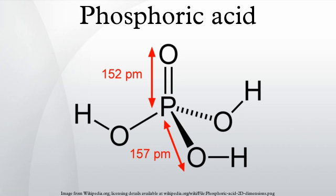In medicine, phosphoric acid is used in dentistry and orthodontics as an etching solution, to clean and roughen the surfaces of teeth where dental appliances or fillings will be placed. Phosphoric acid is also an ingredient in over-the-counter anti-nausea medications that also contain high levels of sugar. This acid is also used in many teeth whiteners to eliminate plaque before application.